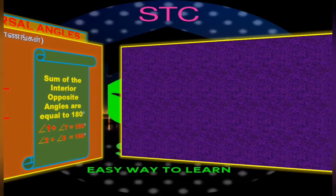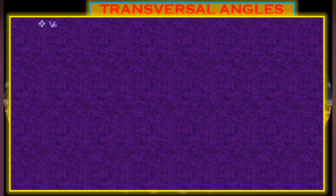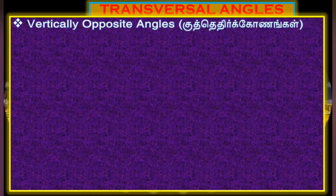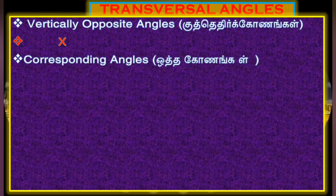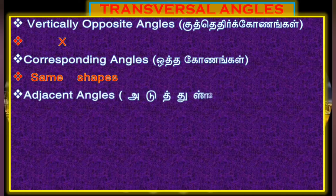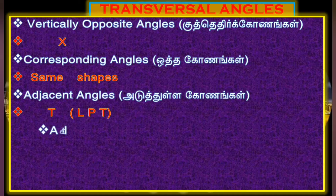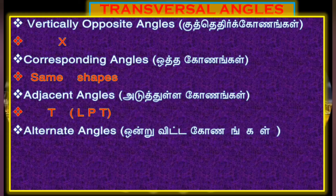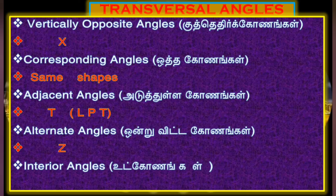Let us look at the summary. The first shortcut is the vertically opposite angle — the vertically opposite angle is X. The corresponding angle is the corresponding angle. The adjacent angle is the adjusted angle.